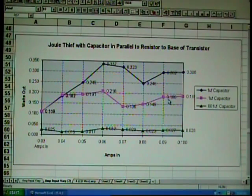The pink line, the middle line, is a 0.1 microfarad capacitor. The wattage output was much greater than a normal Joule Thief.